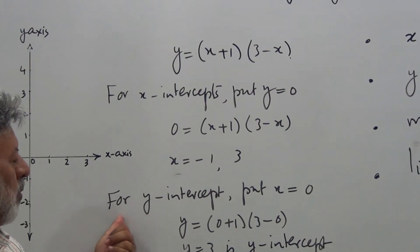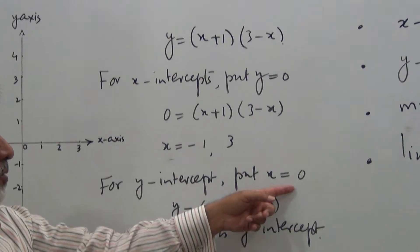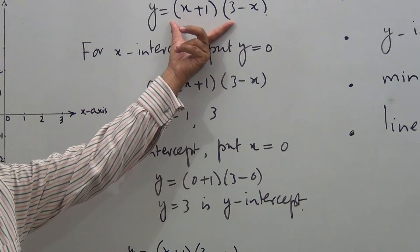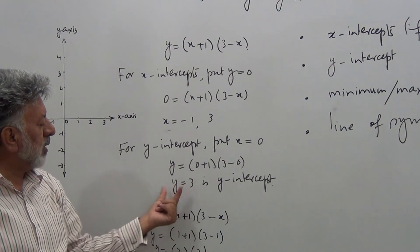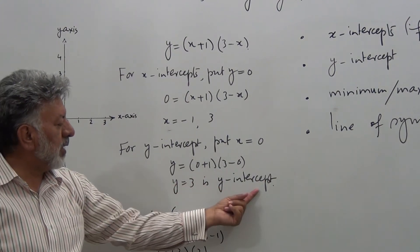In order to get y-intercept, put x = 0 in this equation, and you get y = 3. Y = 3 is the y-intercept.